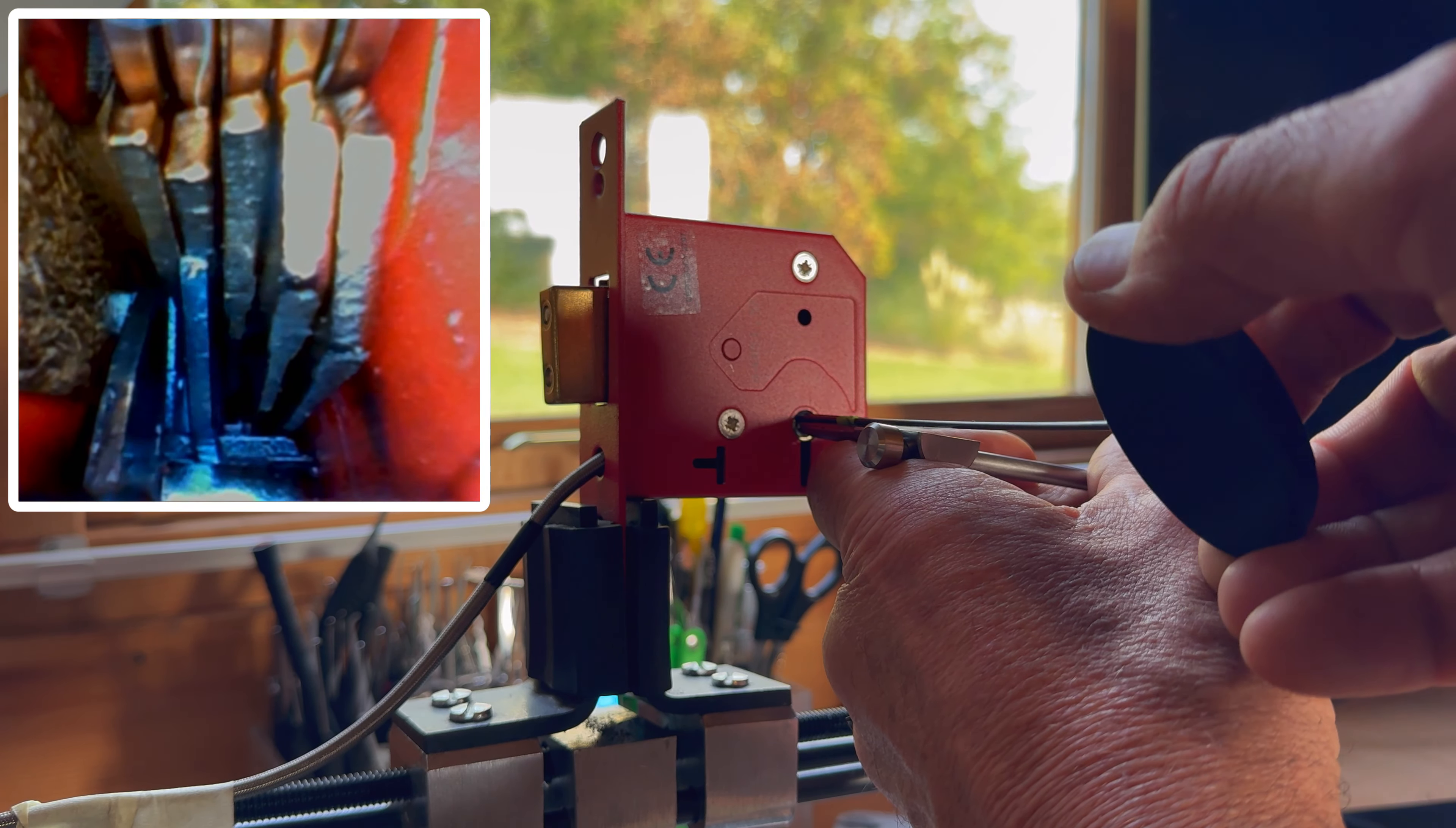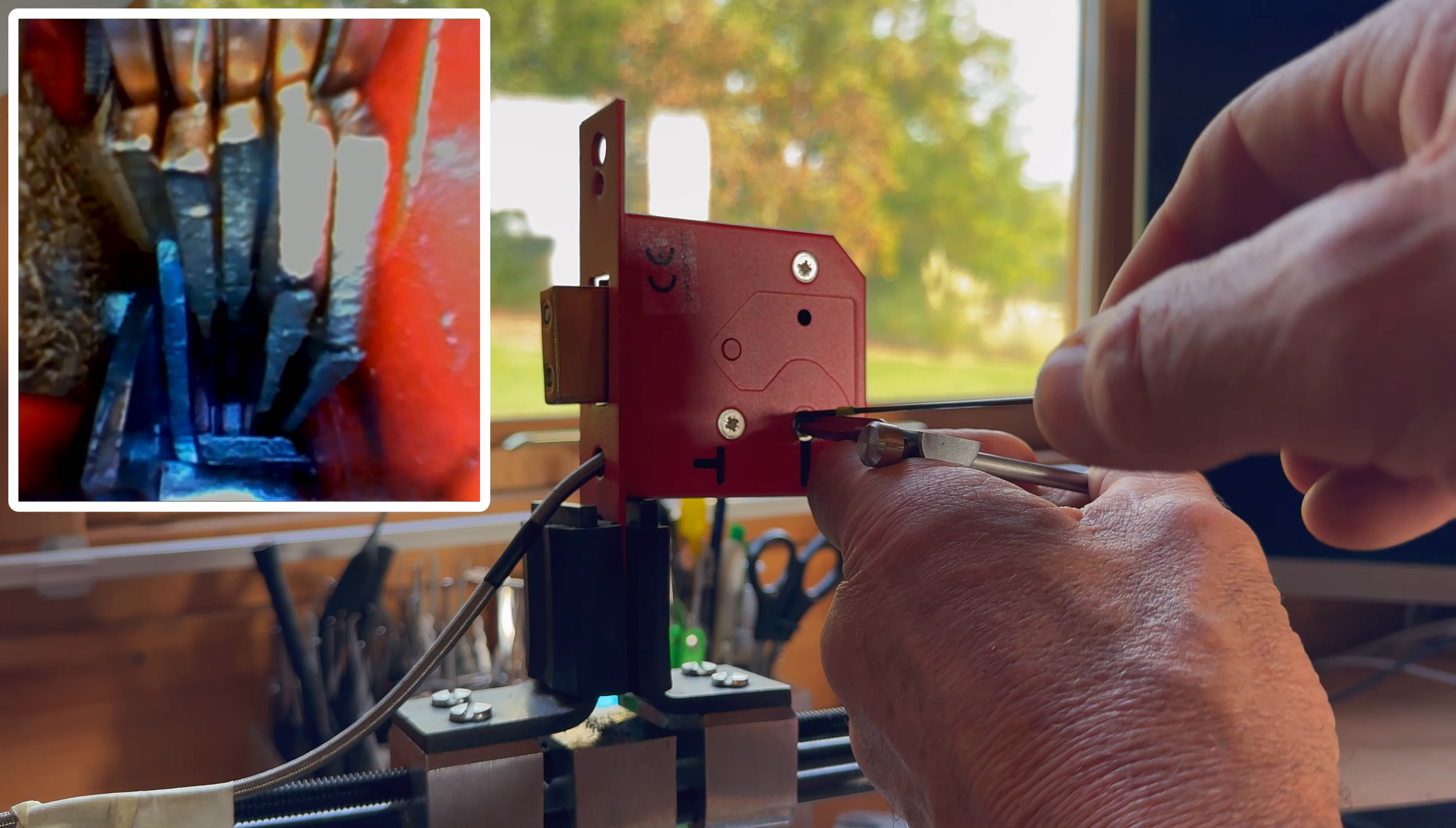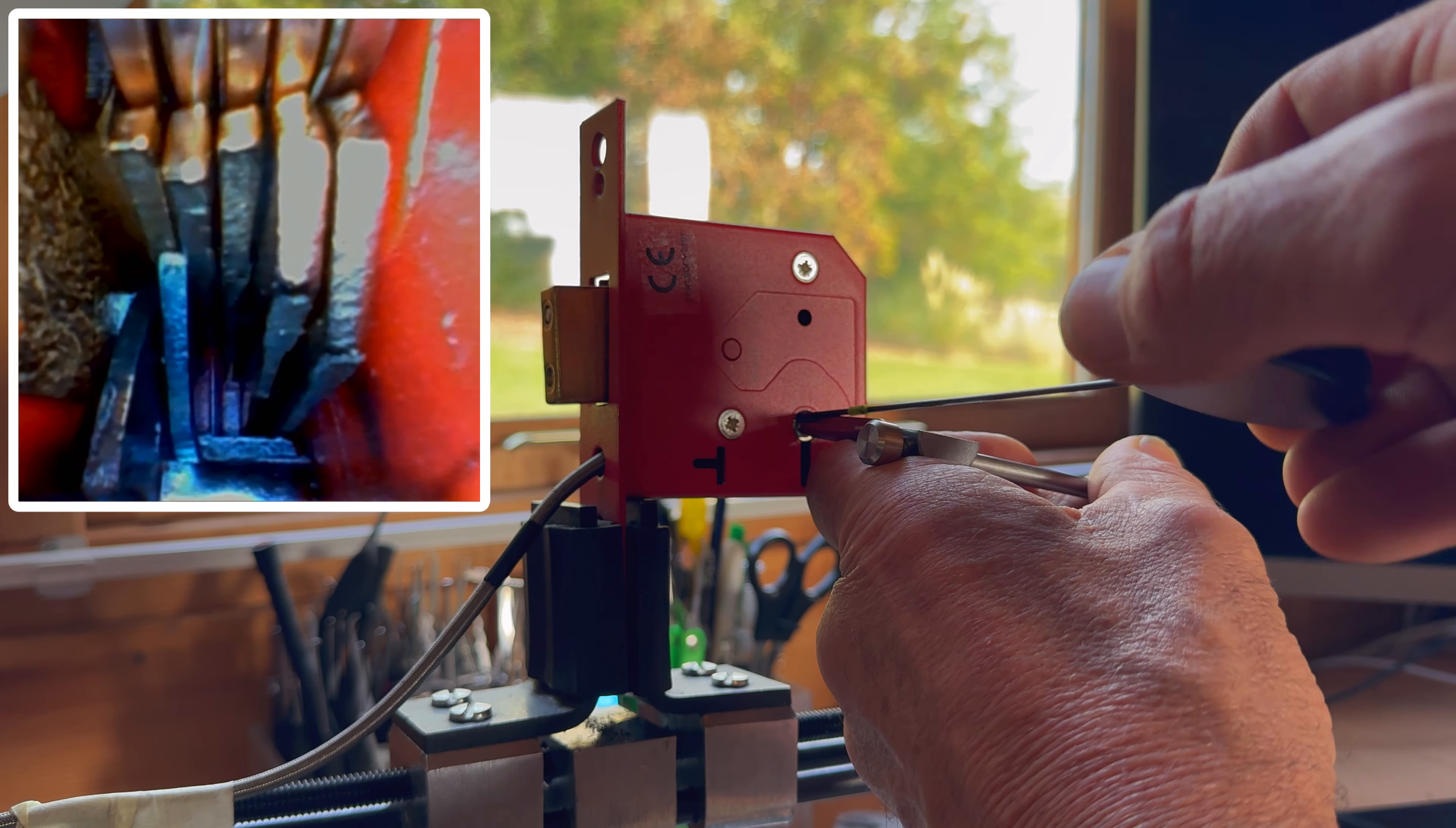So lever five, lever four, lever three are all clicking. Lever two and one are not ready yet to bind. Five, four, three, two, and one are still loose. Five, four, three... and you can see they're all tapping now, so they've all lifted up to their true gates.